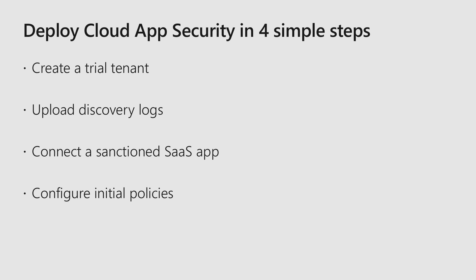Once you have the logs uploaded, you need to connect your sanctioned applications and block access to unsanctioned applications. Microsoft's team of analysts has about 13,000 plus applications ranked based on their regulatory requirements, security controls, and risk scores. You can actually customize that based on your requirements and regulatory components, and Cloud App Security will give you the risk factor for those applications.